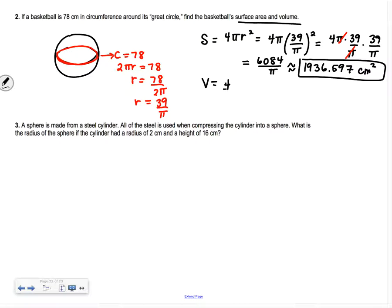Likewise with the volume, we have 4/3 πr³. We take 4/3 π and that 39/π cubed. One of those π's on the bottom will cancel with one on top. We'll have π² on the bottom because we'll have two π's left. You can extend that out and write it.